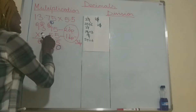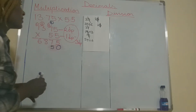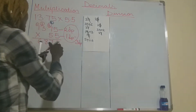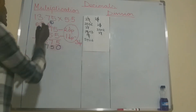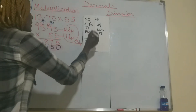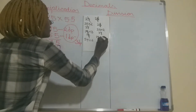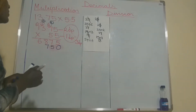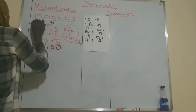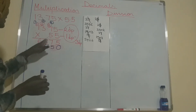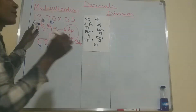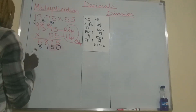Again, multiply 5 times 7, which is 35. Plus the 2 you carried gives you 37. That 7 you write here, and the 3 you carry to the next number. Again, 5 multiplied by 3 is 15, plus the 3 you carried gives you 18. The 8 you write here and the 1 you carry. Then 5 multiplied by 1 is 5, plus the 1 you carried gives you 6. Write your 6 there.